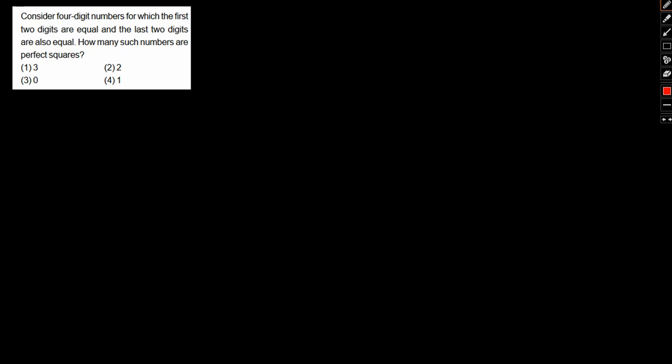We will try to understand the approach toward solving such questions so that we are not alien to them. Now let's take a look at the question. Consider a four-digit number for which the first two digits are equal and the last two digits are equal. How many such numbers are perfect squares?